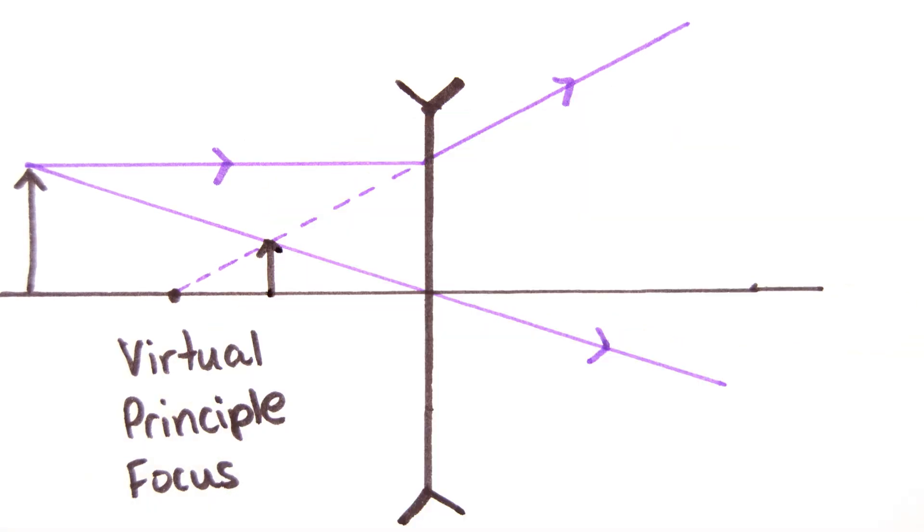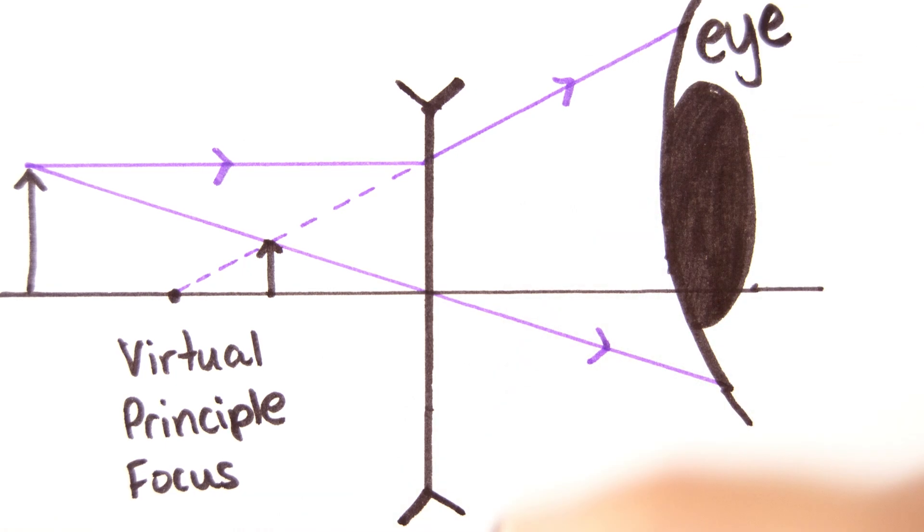Secondly, a ray is drawn passing straight through the centre of the lens without being refracted. The point where the two rays meet is where the virtual image would appear to be.